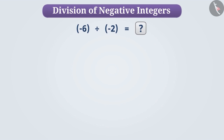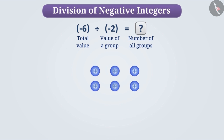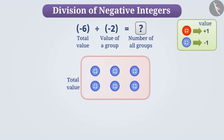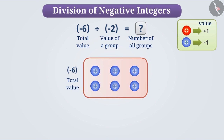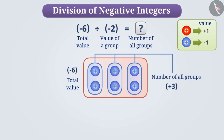Here we have to see how many groups of minus 2 will be there in minus 6. If we keep six blue buttons, then their total value will be minus 6. Out of this, if we make groups of two blue buttons each, we will get a total of three groups.